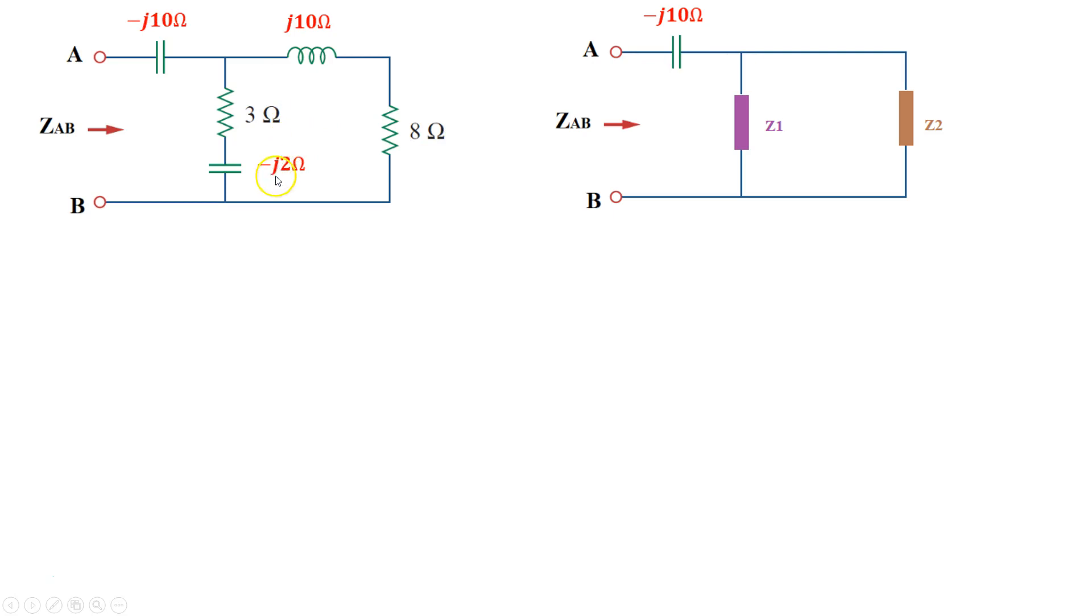3 ohm and -j2 ohm can be written as 3 - j2 ohm overall impedance for z1. And the impedance z2 can be written as 8 + j10.